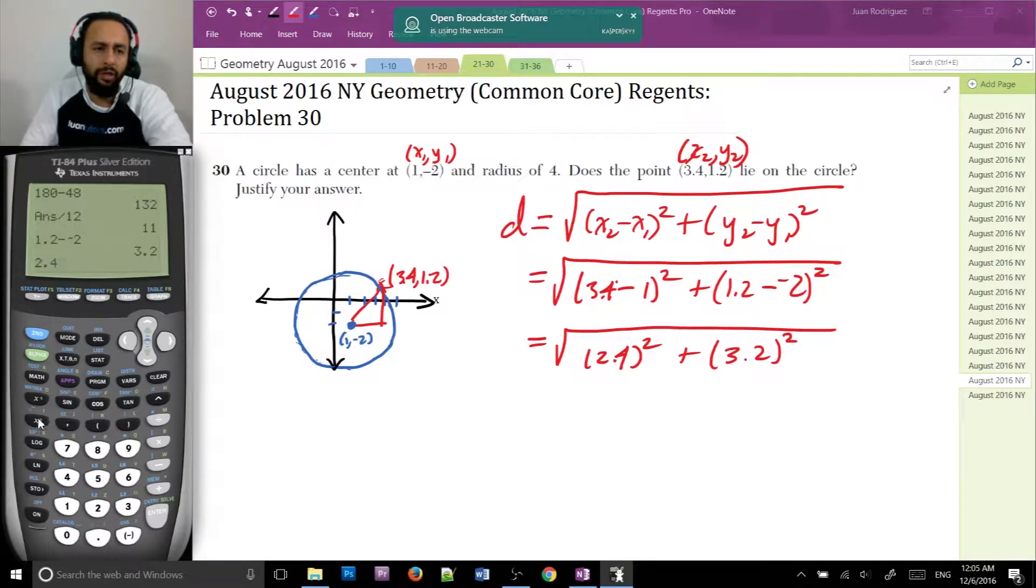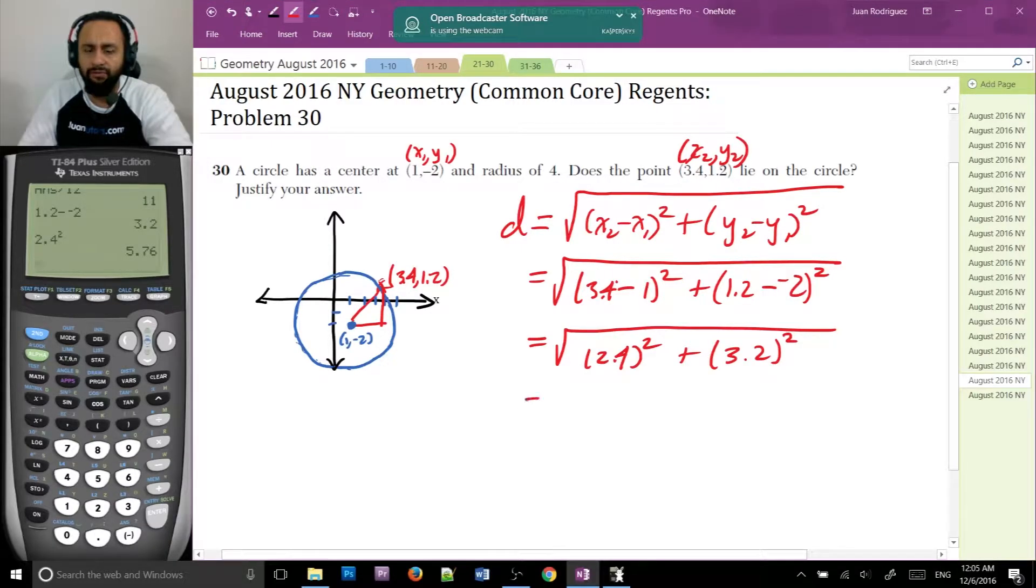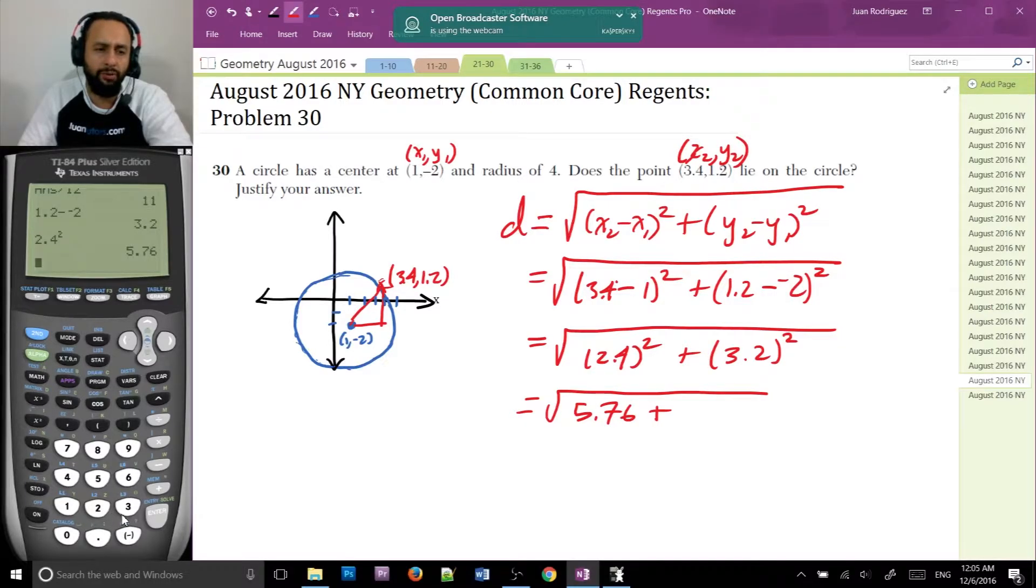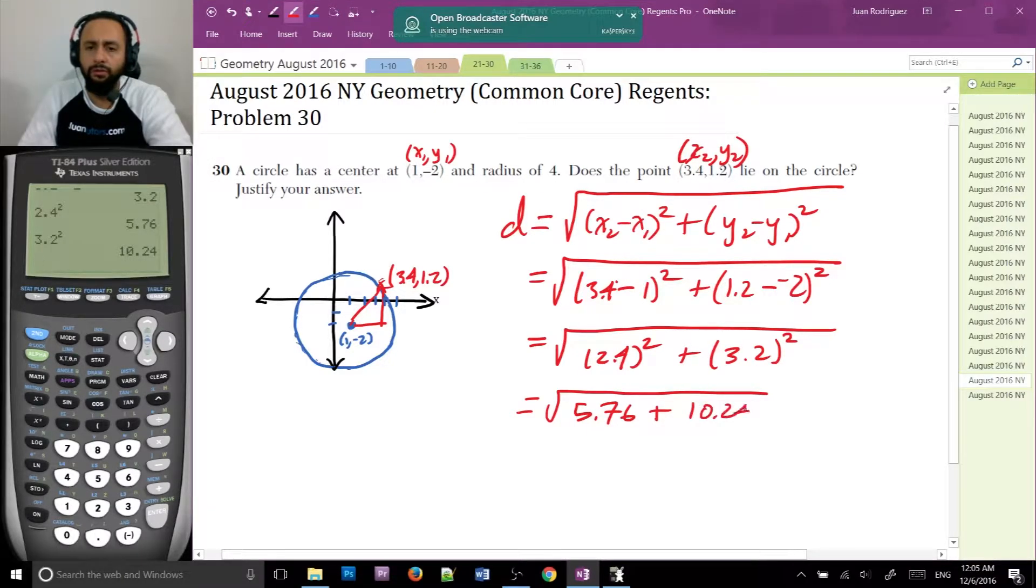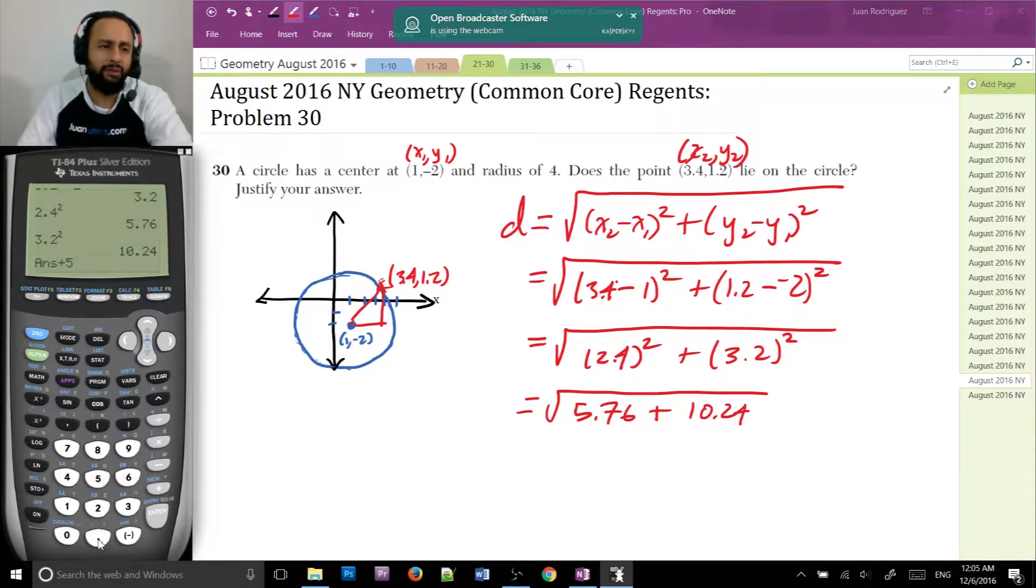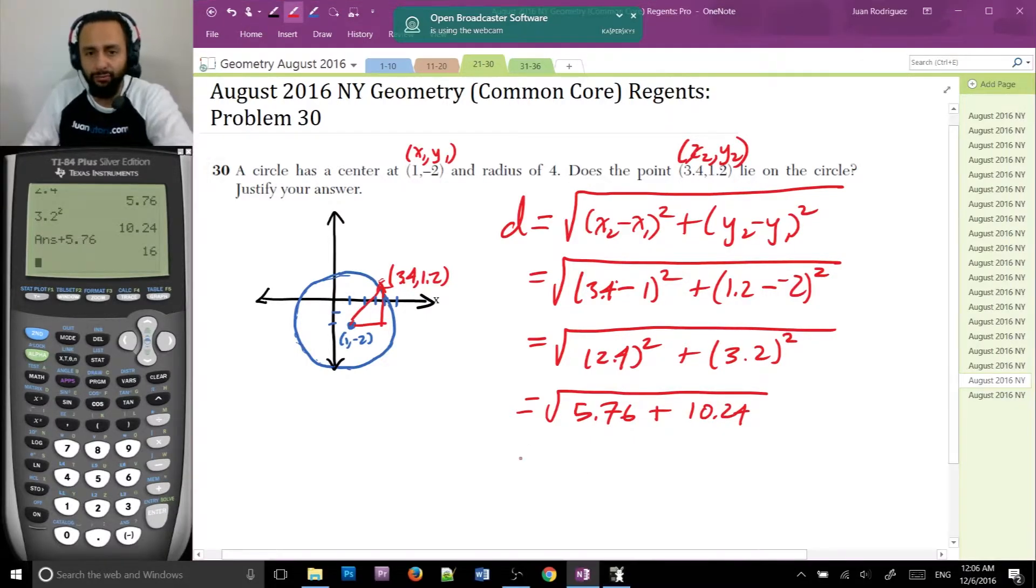Now let's square these numbers. 2.4 squared is, should be 5.76 and it is. So 5.76 and then plus 3.2 squared should be 10.24, 10.24, good. And then I'm going to add these numbers, 5.76.